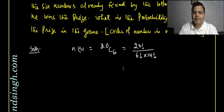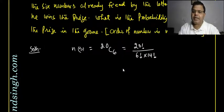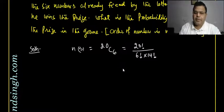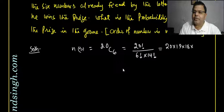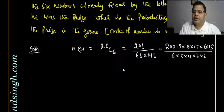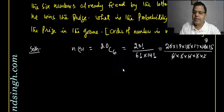The solution: out of 20 numbers, 6 can be selected in 20C6 ways, which is 20! / (6! × 14!). Expanding: (20 × 19 × 18 × 17 × 16 × 15) / (6 × 5 × 4 × 3 × 2 × 1). After cancellation, the product of all these gives 38,760.